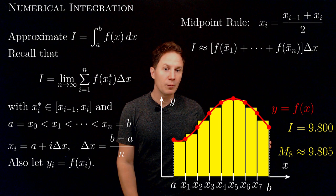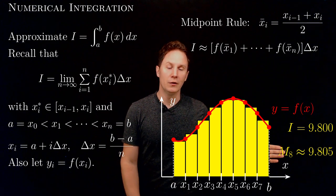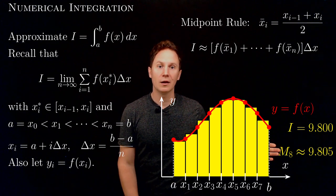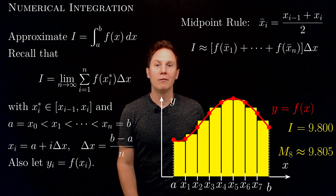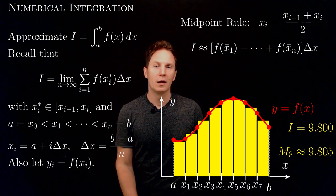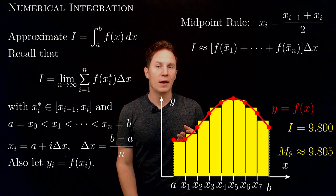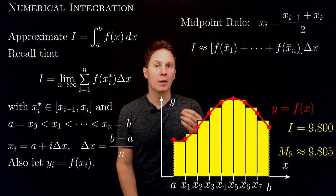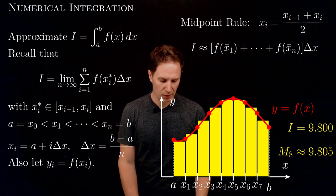The midpoint rule is quite good — surprisingly good — so when we double the number of rectangles, the number of subintervals, the error that we are making goes down by a factor of 4 in each step.